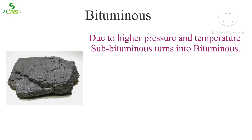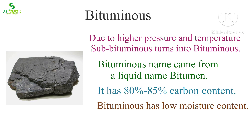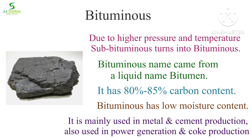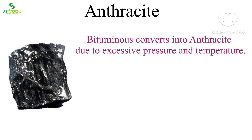Bituminous is a good quality coal. The name bituminous came from a liquid called bitumen. It has high carbon content and low moisture content. It is used in the production of metal and cement, and also in power generation as it has a high calorific value. It is also used in coke production.